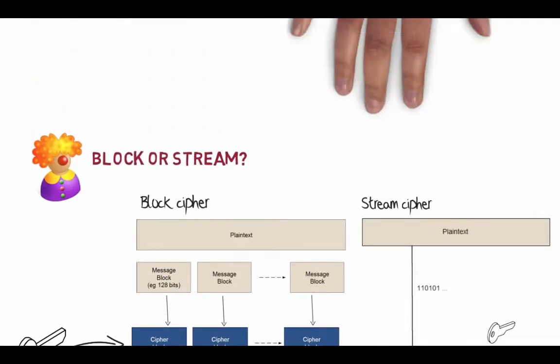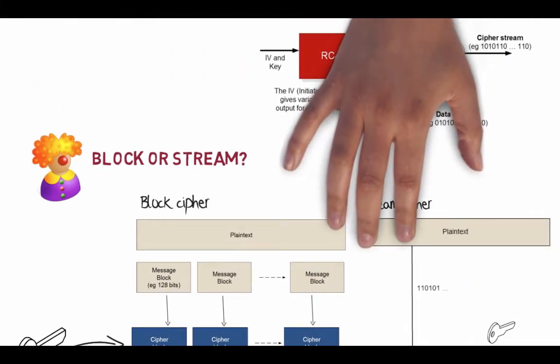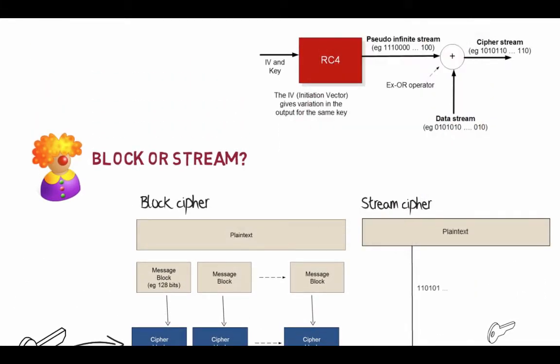Early wireless standards used a stream cipher because of limited hardware. RC4 is an example of this: we have an initialization vector that provides our seed, and a key used for encryption. RC4 creates the infinitely large key, then we take our data stream, exclusive OR them together, and end up with our cipher stream.